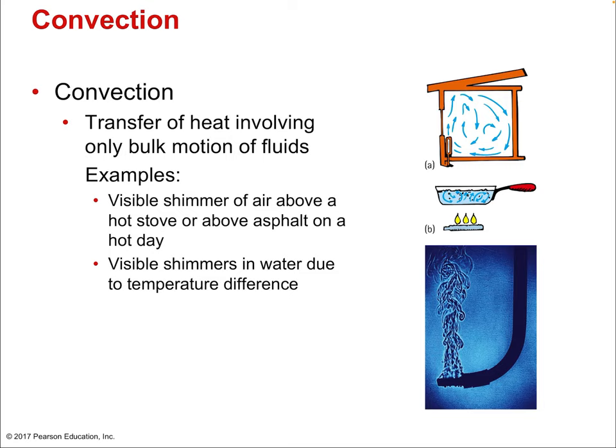Now on to type two of heat flow: convection. This is all about fluid movement — both gases and liquids, all fluids. Convection is described by the phrase 'bulk motion,' meaning the fluid moves in chunks or pockets, not individual molecules. You have big pockets of hot air rising or big sheets of hot water rising. Examples: the visible shimmer of air above a hot stove or above asphalt on a hot day — pockets of rising hot air. That's convection.